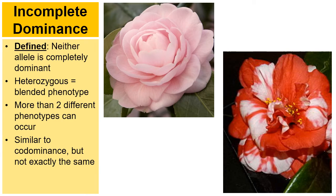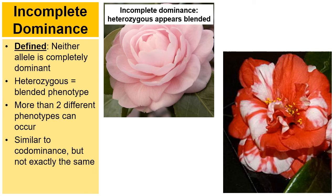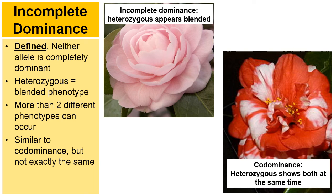Incomplete dominance is very similar to co-dominance, which I explained in a different video, but the two patterns are not exactly the same. The pink flower is an example of incomplete dominance where the heterozygous individual appears as the blended color — the two parents were probably white and red. But the picture on the right is an example of co-dominance: it's also heterozygous, but the red and white are not blending to make pink. You see patches of red and patches of white — some petals are red, some are white. You see both at the same time. That's co-dominance.